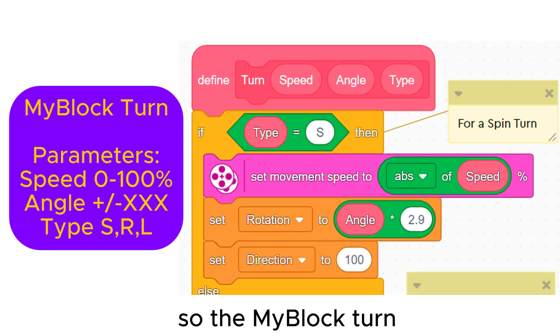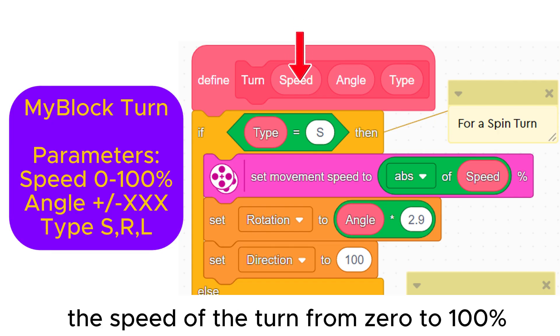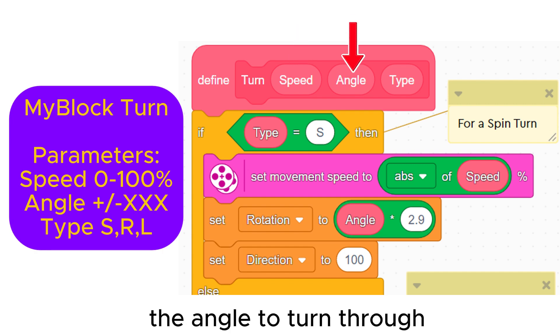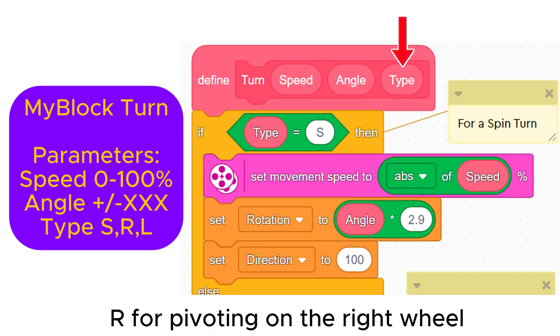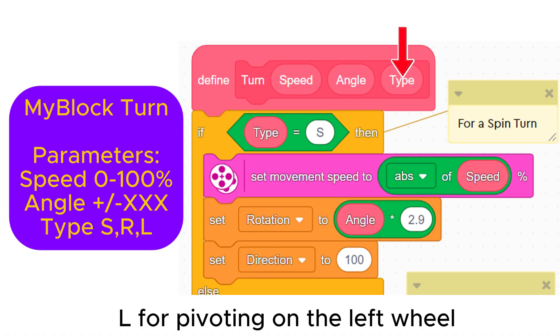So the my block turn has three parameters. The speed of the turn from 0 to 100 percent. The angle to turn through positive for clockwise, negative for anti-clockwise. Type S for a spin turn, R for pivoting on the right wheel, L for pivoting on the left wheel.